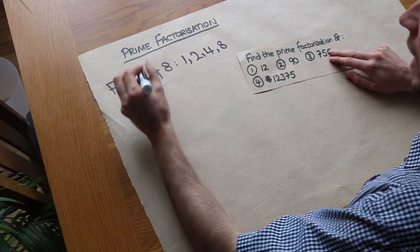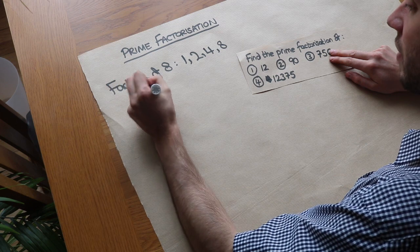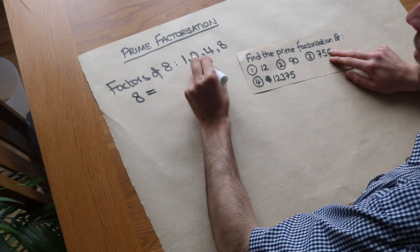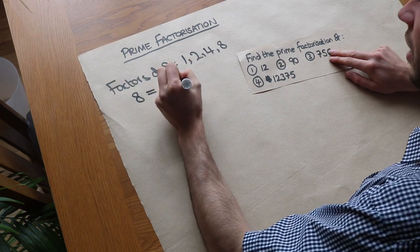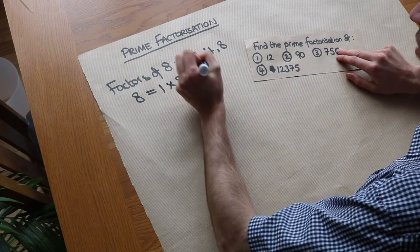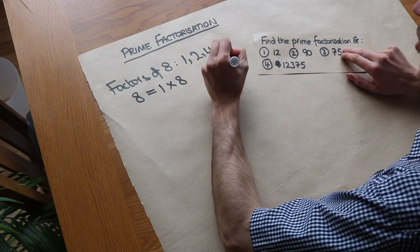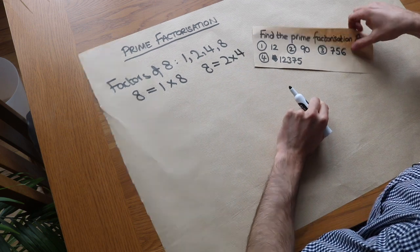And if it's a factor of 8 we could write 8 as a kind of product of these numbers. So 8 we could write as a product of say 1 and 8, a product of 2 of its factors. We could write 8 as 2 times 4, a product, i.e. a multiplication of 2 of its numbers.